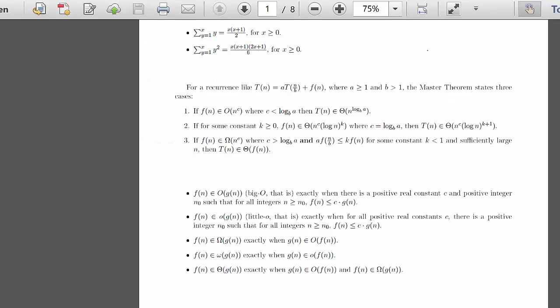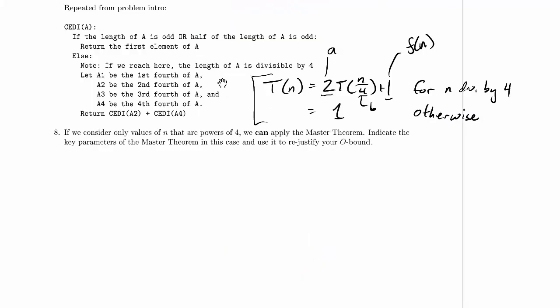Now additionally, we need to make sure a is greater than or equal to 1, it is, it's 2, b is greater than 1, it is, it's 4. And then we need to figure out which of these cases we fall in, which has to do with bounds on f(n). Now the bounds are polynomials in n, so let's convert one into a more convenient form.